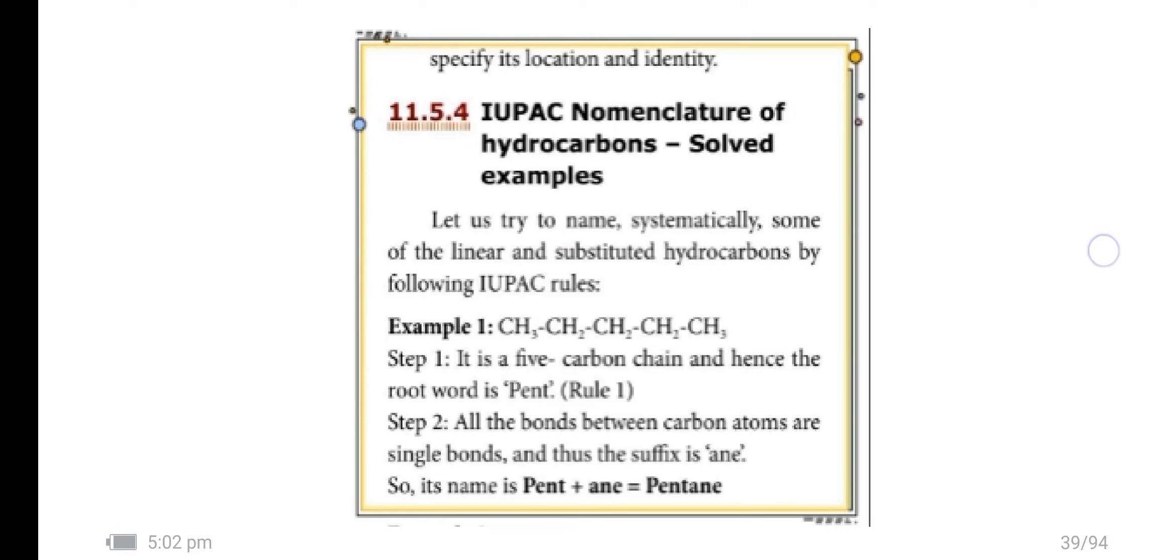IUPAC nomenclature of hydrocarbons - solved examples. Example 1: CH3-CH2-CH2-CH2-CH3. It is a 5 carbon chain and hence the root word is pent.